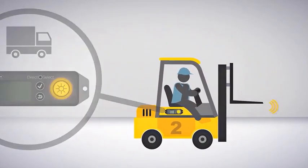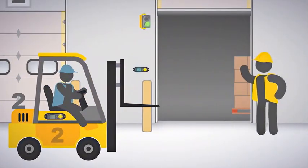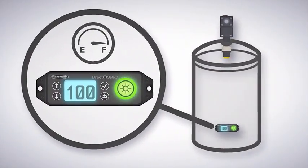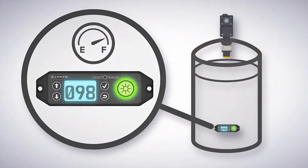Here a Direct Select is being used to indicate the amount of liquid in the tank. As the available volume changes, the LCD display reflects that. Meanwhile, the visual indicator alerts workers if the tank is getting low.